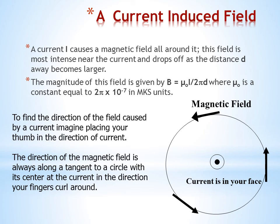To find the direction of the field caused by a current, imagine placing your thumb in the direction of current. The direction of the magnetic field is always along a tangent to a circle with its center at the current, in the direction your fingers curl around.